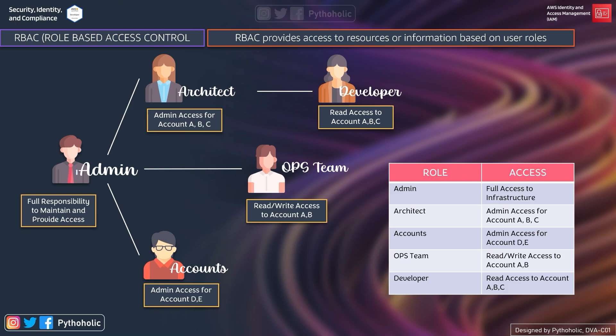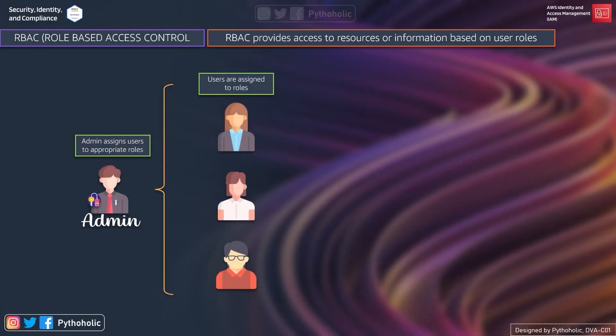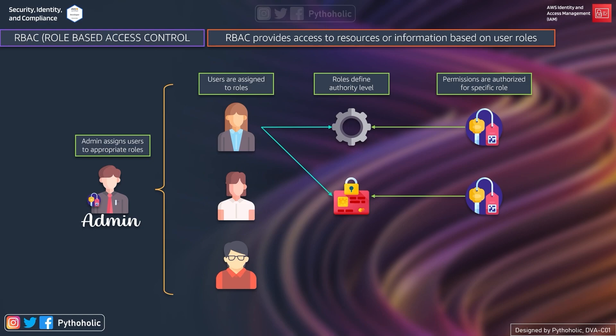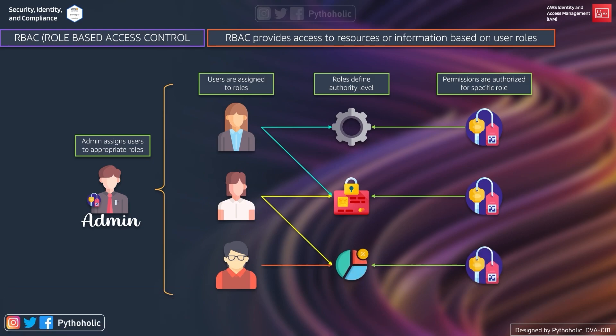When we assume a role, the admin actually assigns users with the appropriate role like SRE, architect, or developer. Users are assigned roles, based on which the required authority level and permissions are granted for specific roles. The admin has full access and all permissions are provisioned based on their role. Similarly, roles are defined not just for users but also for user groups, like a group of admins or a group of developers.